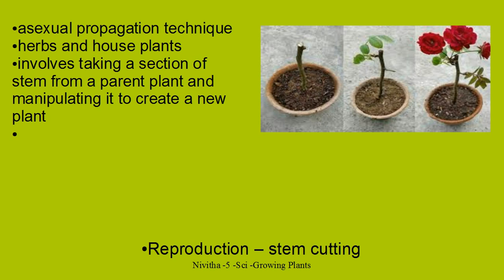Rose and hibiscus are important examples where if you cut a portion of the stem of an existing plant and give adequate soil, warmth, sun, water, and air, it will start giving shoots, leaves, and it will start flowering and grow. Herbs and houseplants can be grown in this fashion. This is called asexual propagation because we are not using the capacity of two plants to form a seed through pollination. We are not using the seeds but using from within the same plant — it involves taking a section of the stem of a parent plant and manipulating it to create a new plant.